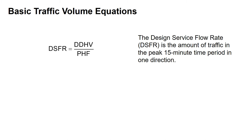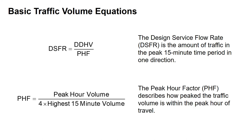We can also calculate our design service flow rate — the amount of traffic in that peak 15-minute time period in one direction. That's our directional design hourly volume divided by our peak hour factor, focusing on that 15-minute window within the peak hour. If the peak hour factor isn't given, it equals the total peak hour volume divided by four times the highest 15-minute volume. This will always be less than one, since in real life there's variation between those 15-minute periods.